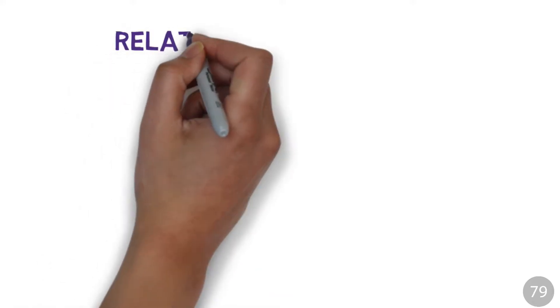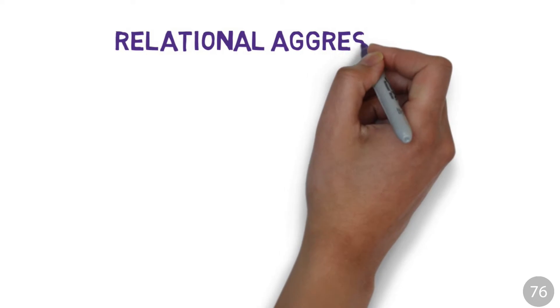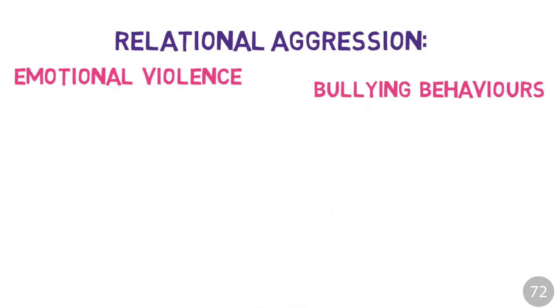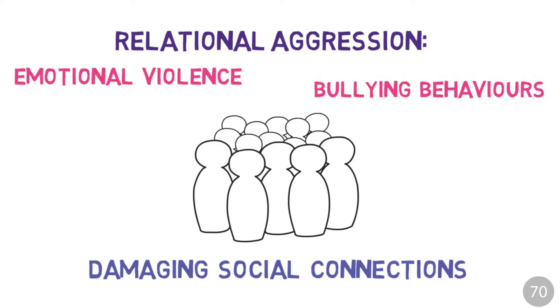The term relational aggression was developed in the early 90s by Dr. Nikki Crick. She defines it as emotional violence and bullying behaviours focused on damaging an individual's social connections within their peer group.